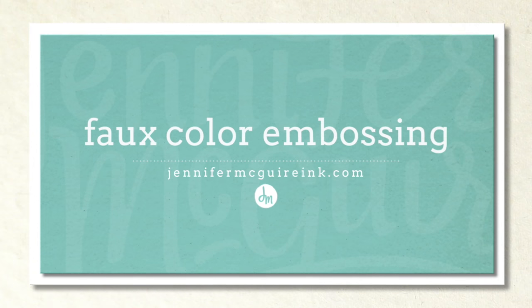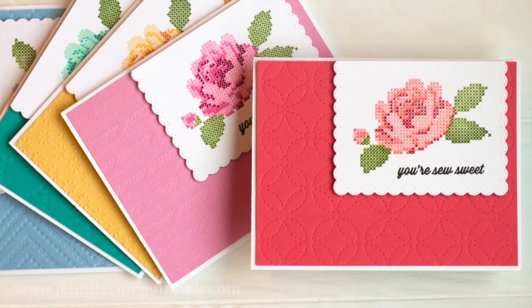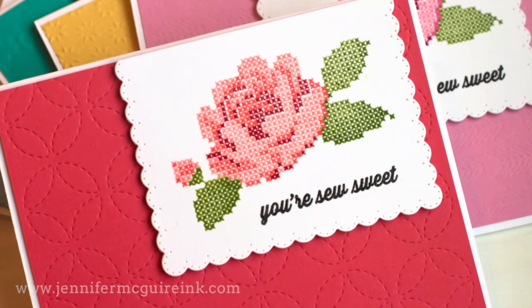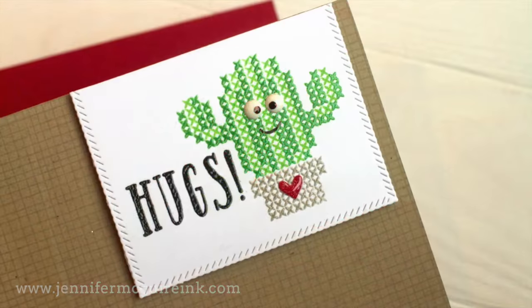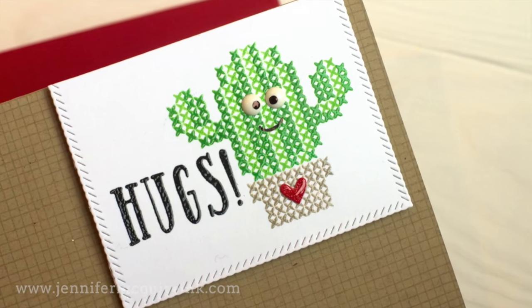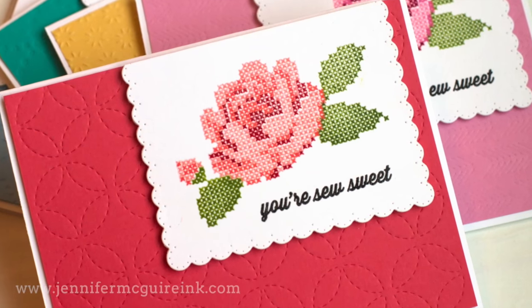Hello and welcome back, this is Jennifer McGuire. In today's video, I wanted to show you how to create the look of colored embossing, even if you don't have a bunch of embossing colors. And I also have some tips for using a MISTI stamping tool and getting more out of background dies. You can see the cards that I created here, and I have a bonus card at the end of this video. But let's go ahead and get started with the cross stitch flower cards that you see here.